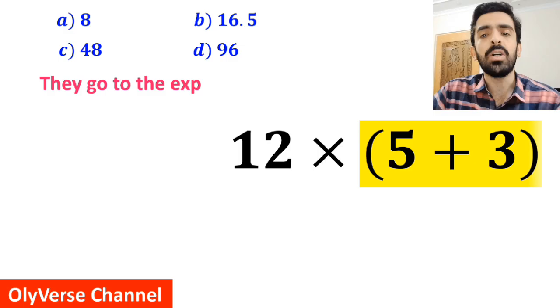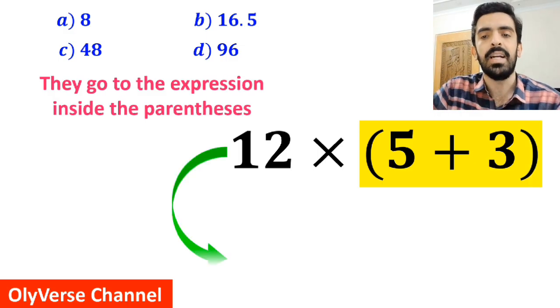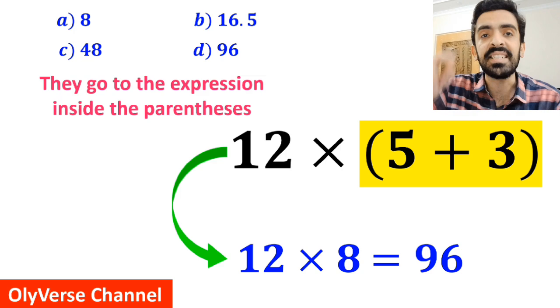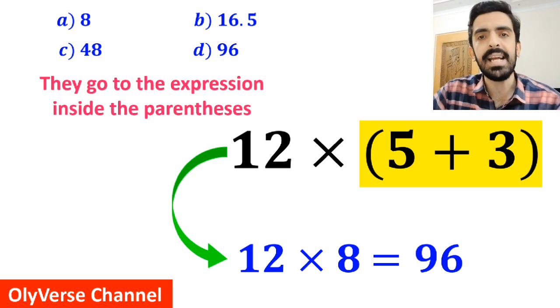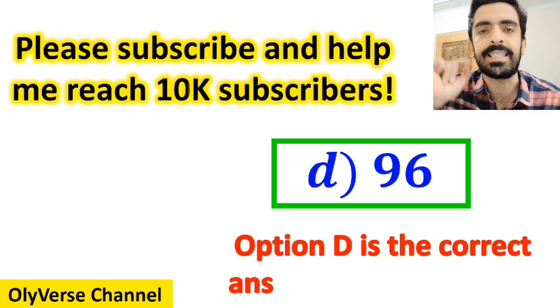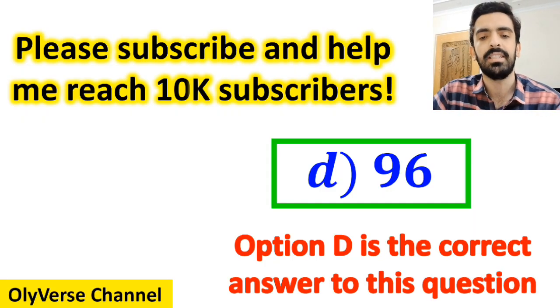In the final step, they go to the expression inside the parenthesis and simplify it to 12 times 8, which eventually gives them the answer 96. Then, without any hesitation, they quickly say that option D is the correct answer to this question.